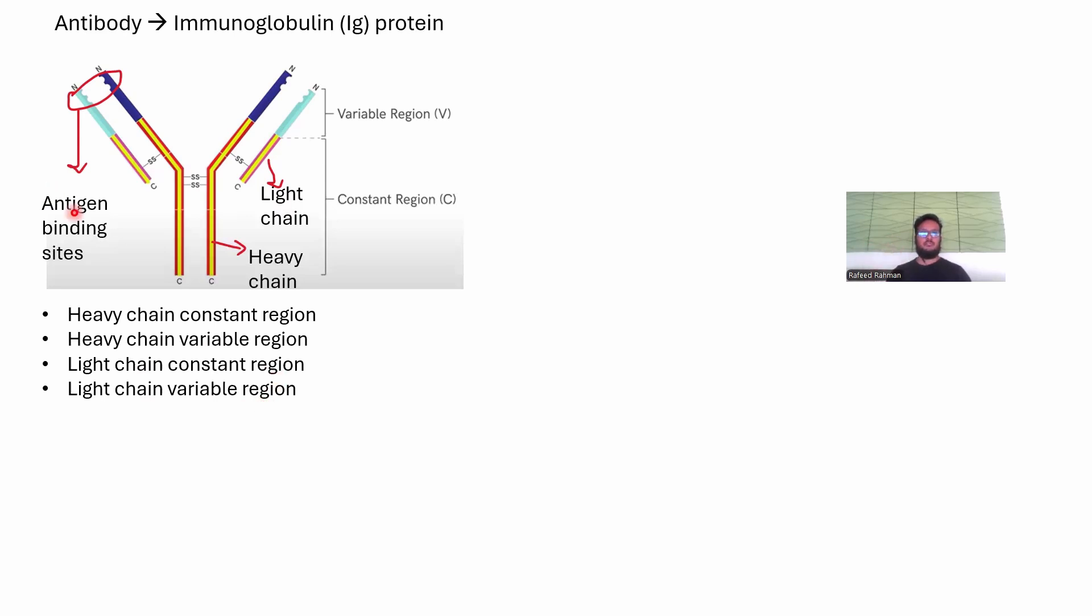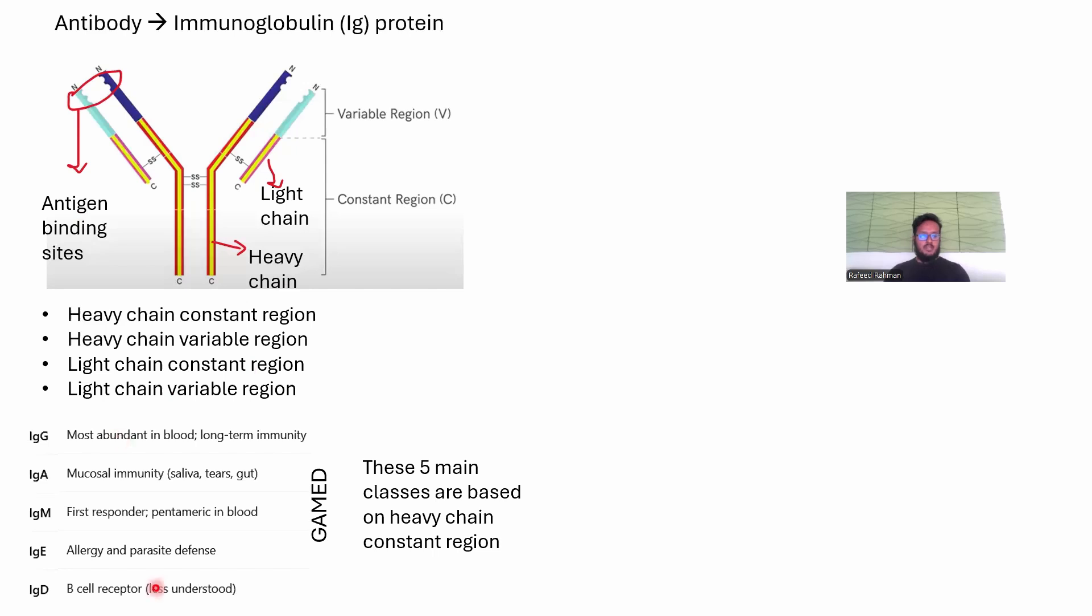There are mainly five main classes of antibodies: IgG, IgA, IgM, IgE, and IgD. It's easy to remember because it's just GAMED. IgG is the most abundant one. The question is how did they make these five classes? It's based on the heavy chain constant region. The heavy chain constant region, this yellow part right here, differs in these five main classes.